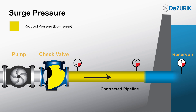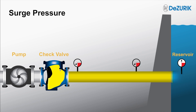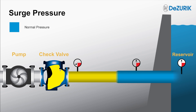The downsurge temporarily brings the entire system to a reduced pressure. As the wave is reflected from the reservoir, there is a surge in the opposite direction at normal pressure, shown in blue, which is indicated on the pressure gauge and travels back towards the closed check valve.